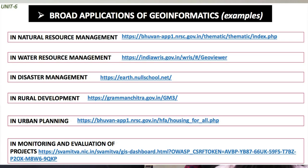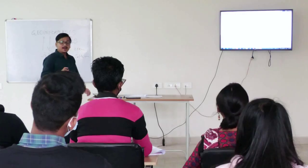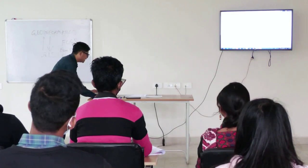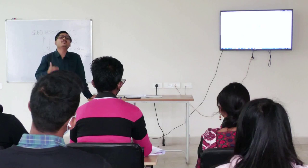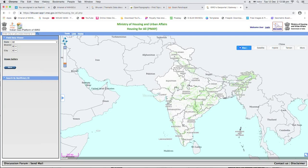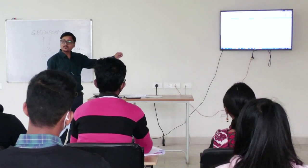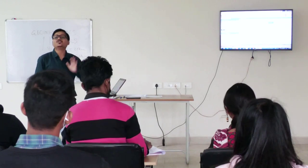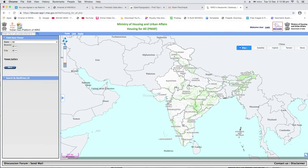For urban planning, we have another website. It is also developed using the Bhuvan platform. You have heard about Pradhan Mantri Awas Yojana. Like Pradhan Mantri Awas Yojana for rural areas, it is also for urban areas. For urban areas also we have Pradhan Mantri Awas Yojana. These particular projects or government missions are nowadays being monitored using geoinformatics — for transparency: whether the house is made or not, whether trees are planted or not. You can get that particular information using remote sensing, GIS, or geoinformatics technology. This is Pradhan Mantri Awas Yojana for urban areas.